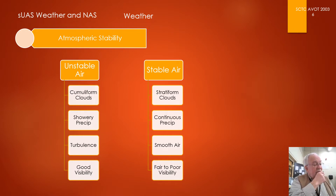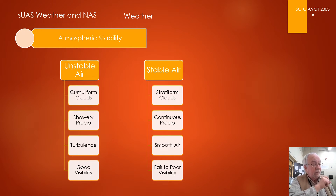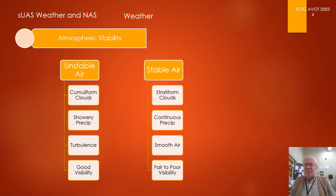Convective clouds and precipitation pose a distinctly different flying environment than stratiform clouds and precipitation. These sharply contrasting conditions result from the atmosphere either resisting or accelerating the vertical motion of air parcels. Atmospheric stability is the property of the ambient air that either enhances or suppresses vertical motion of air parcels, and determines which type of cloud and precipitation a pilot will encounter.